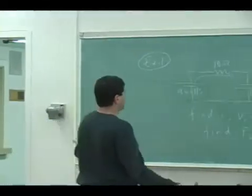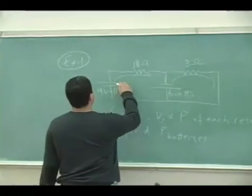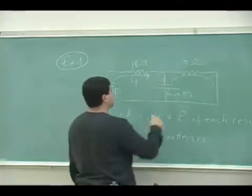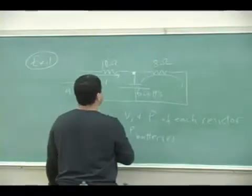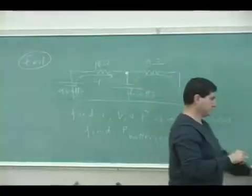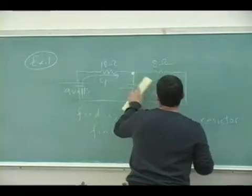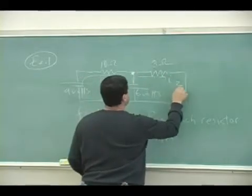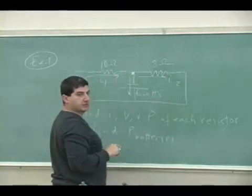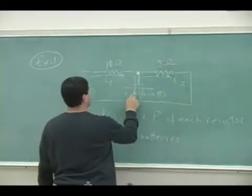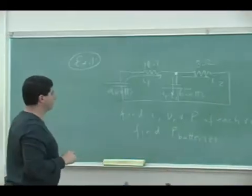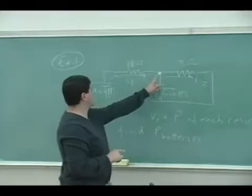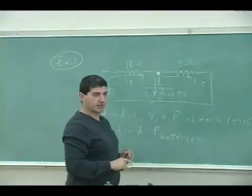So we do it a similar way like we did that circuit. We say let's say this is the current I1. It comes into this junction and splits into I2, and then what's left is I1 minus I2 down the middle.